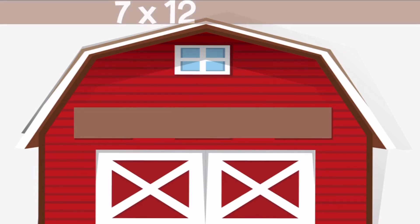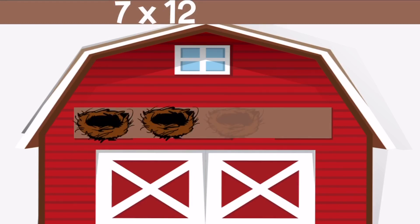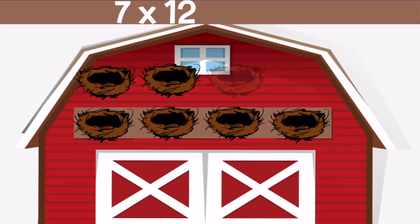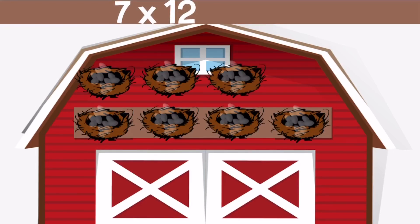7 times 12 means we need 7 nests with 12 eggs inside of each nest. If we count up all of the eggs we have 84 eggs total.